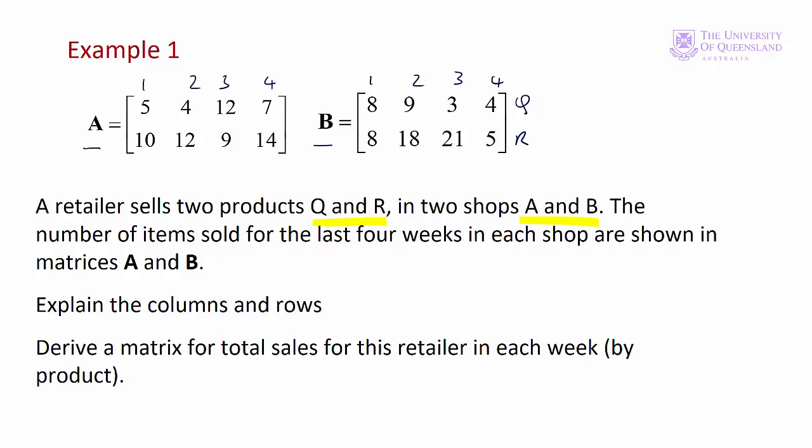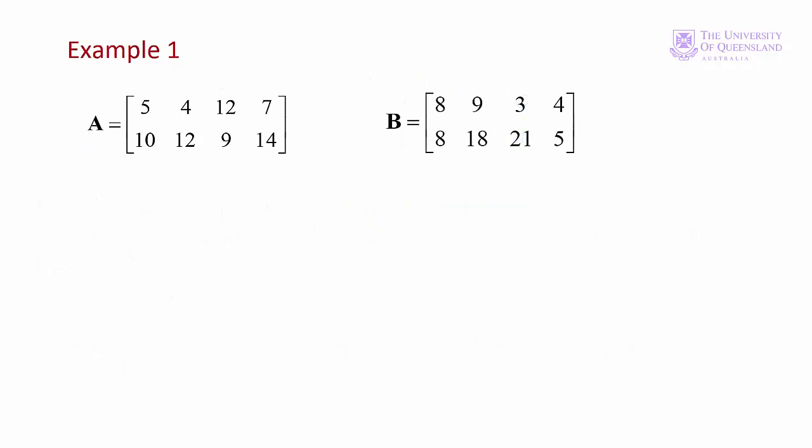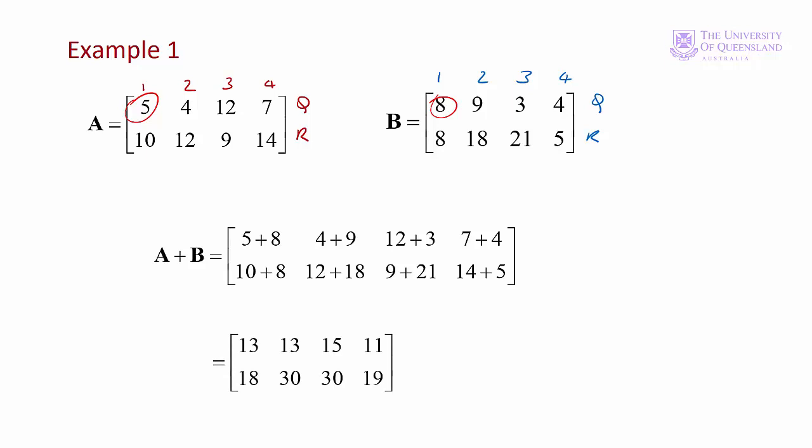Now we want to find total sales for each week by product. To do that, we'll add matrices A and B. Recall what the columns and rows stand for. The columns represent the weeks and the rows represent the products. So for product Q, for example, we add the sales in the first week together. So there'll be 5 plus 8 and so on. We do that for all the corresponding elements. And then we find our total sales.